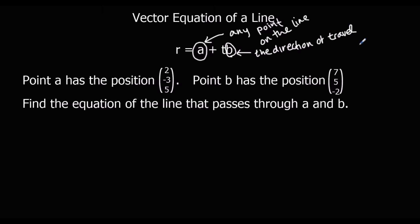So point a has the position (2, -3, 5), point b has the position (7, 5, -2). When we have the equation of our line, we're going to have r equals a, and that can be any point, so we could have either of these two points as our a. So I'll pick the first one.